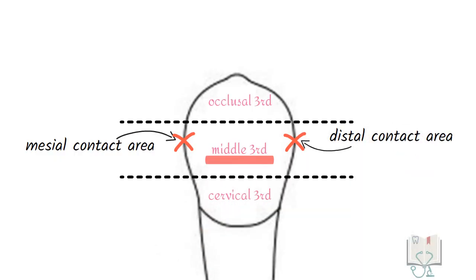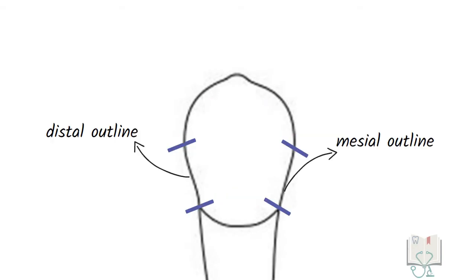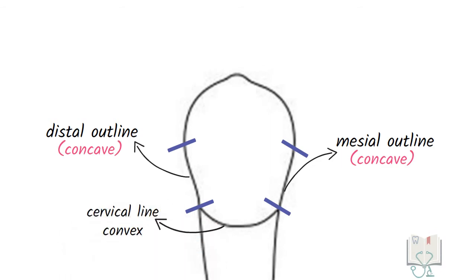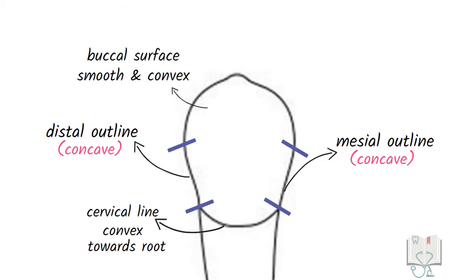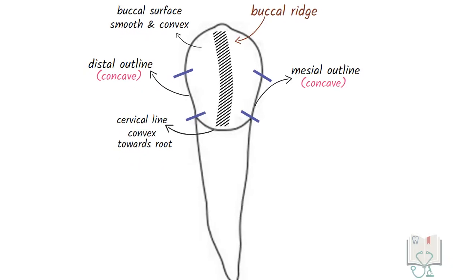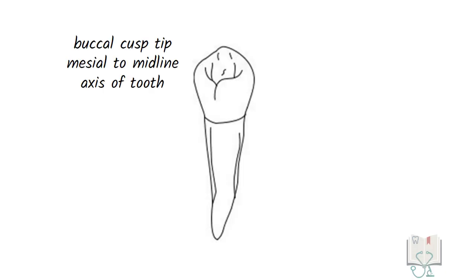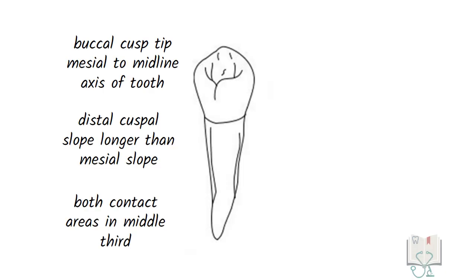The mesial contact area contacts the canine and the distal contact area contacts the second premolar. Both the mesial and distal outlines of the crown are slightly concave. The cervical line is convex with its convexity towards the root. The crown surface is smooth with a prominent buccal ridge running from the cusp tip to the cervical line. The mandibular first premolar has a single root which is smooth and conical.